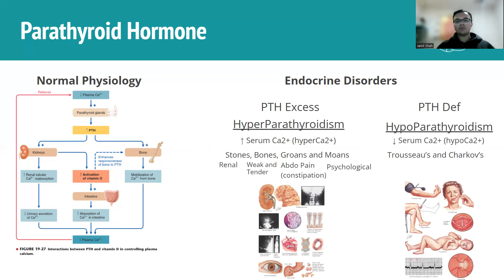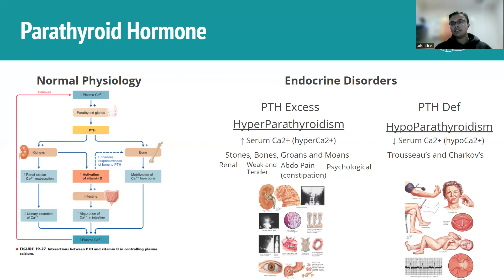Bones: calcium is pushed out of bones into the blood, reducing bone density and causing weak, tender bones detectable on palpation. Groans: hypercalcemia reduces GI motility, causing constipation and abdominal pain. Moans: psychological symptoms from the electrolyte imbalance. Parathyroid hormone deficiency leads to hypocalcemia, and the two key clinical signs are Trousseau's sign and Chvostek's sign.